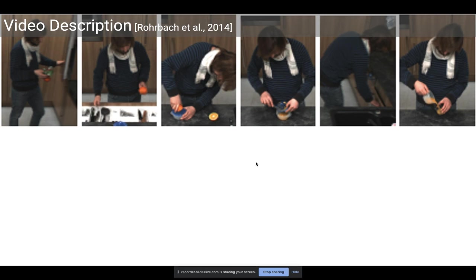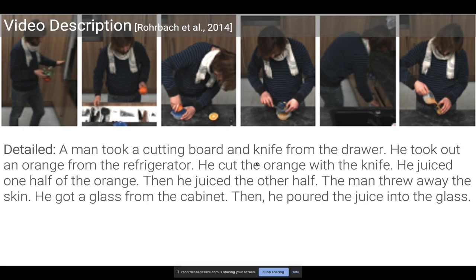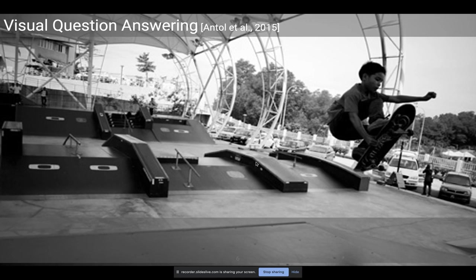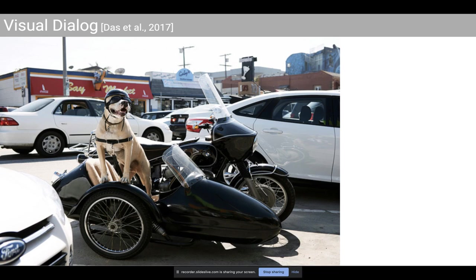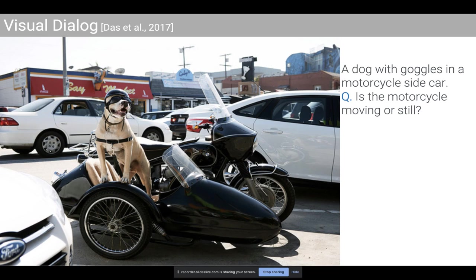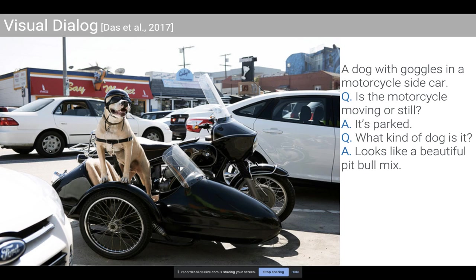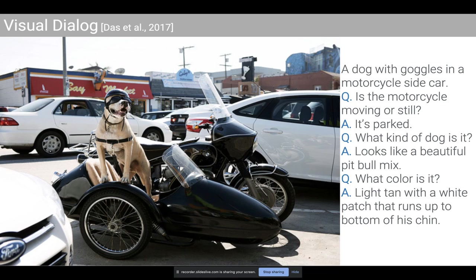These are systems that can describe not just images but videos at various levels of detail and granularity. Systems where instead of passively describing an image, you can actively ask questions like 'what is the kid doing?' and it might answer 'skateboarding,' or have a back-and-forth conversation grounded in the contents of the image. For example, the system might start by describing a dog with goggles in a motorcycle sidecar, and you can then ask follow-up questions: is the motorcycle moving or still? It says it's parked. What kind of dog is it? Looks like a beautiful pit bull mix. What color is it? Light tan with a white patch running up to the bottom of its chin.